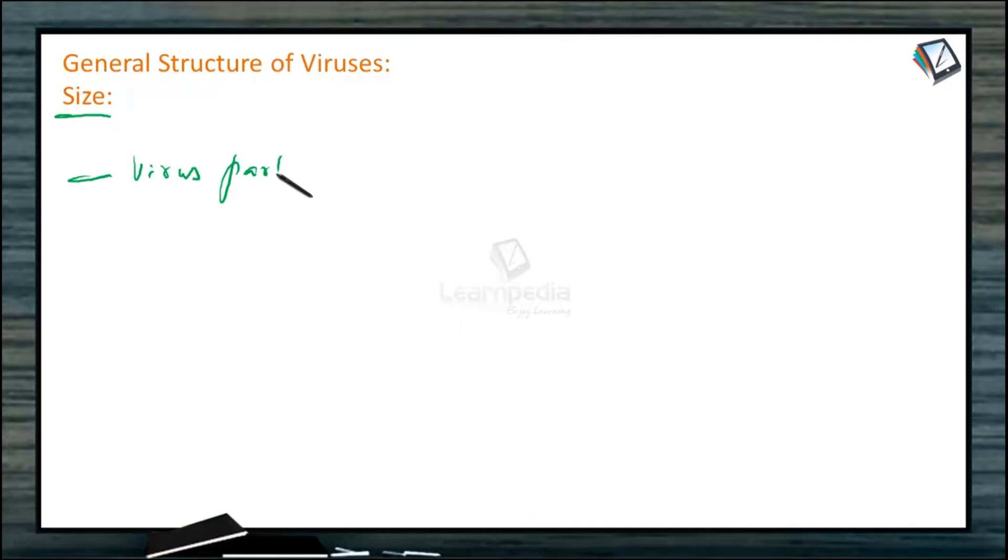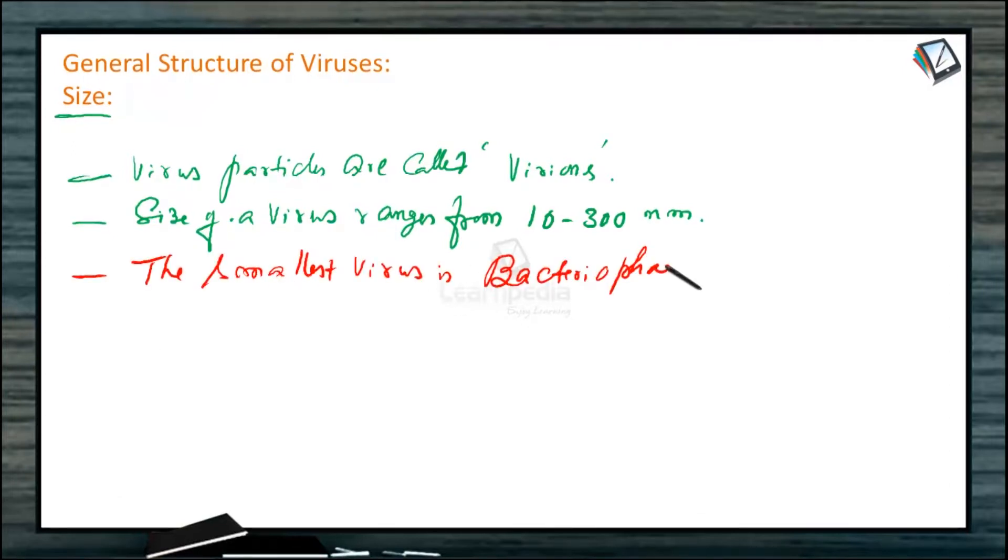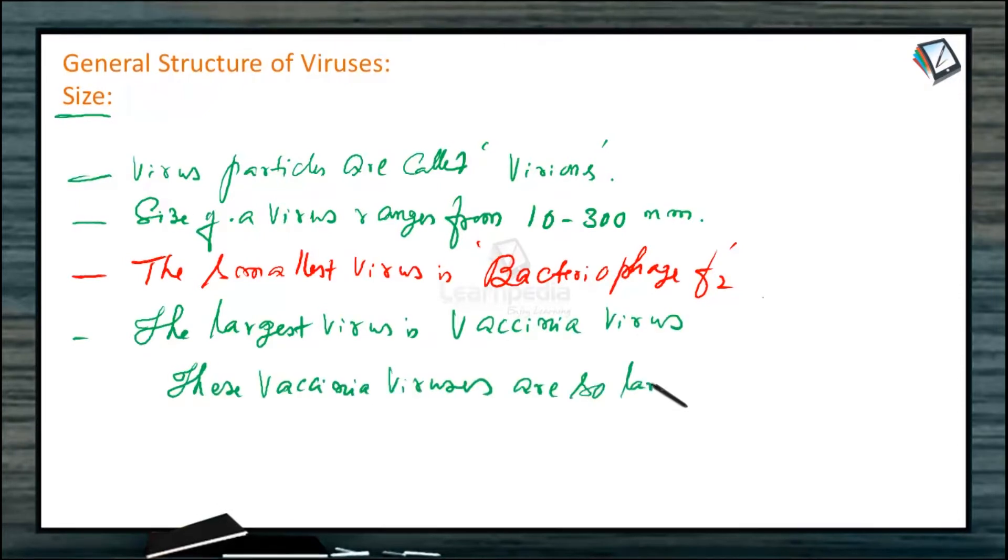General structure of viruses. Size: Virus particles are called virions. Size of a virus ranges from 10 to 300 nanometers. The smallest virus is bacteriophage F2. The largest virus is vaccinia virus. These vaccinia viruses are so large that they can be seen under compound light microscope.